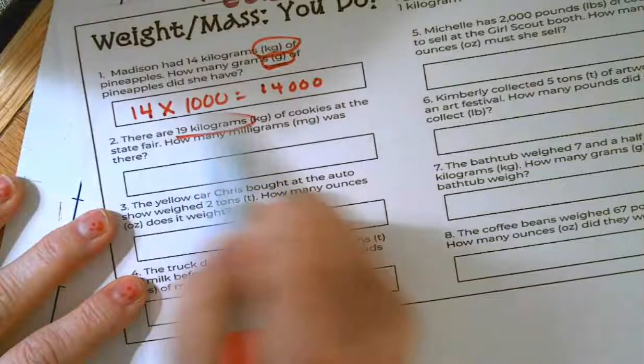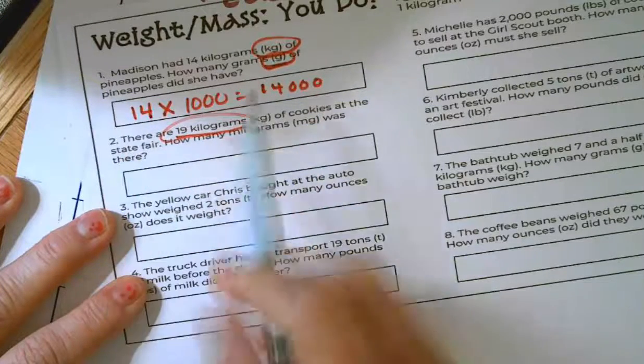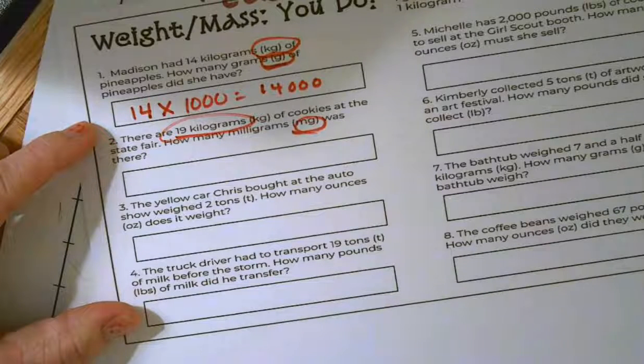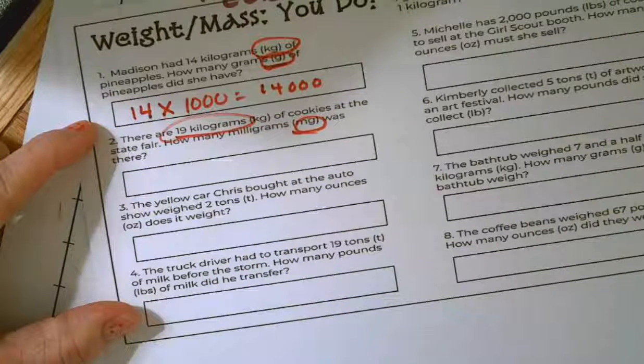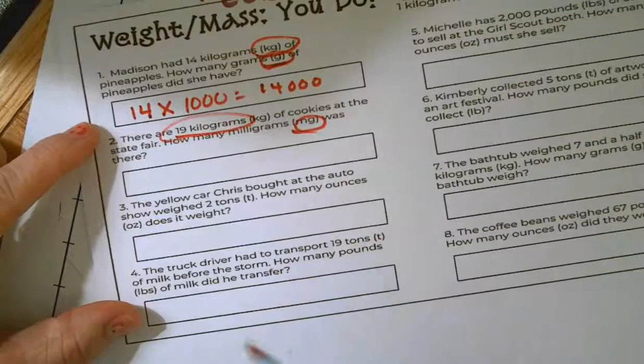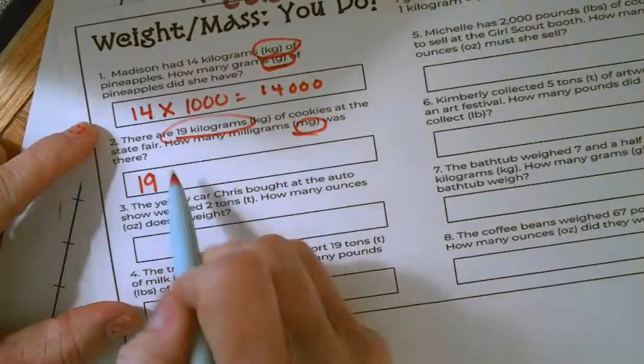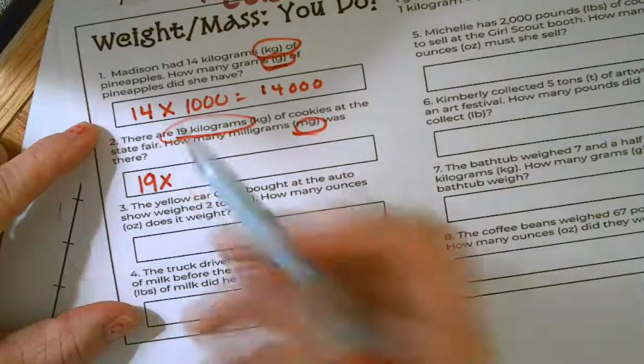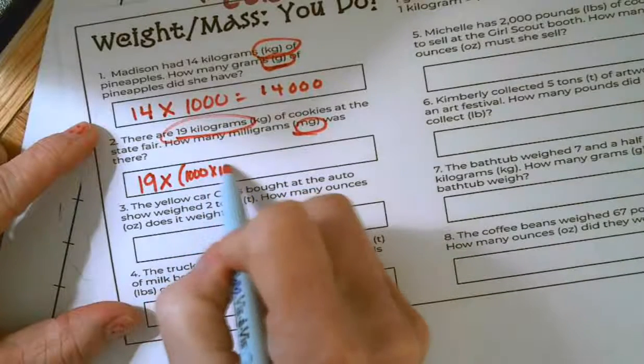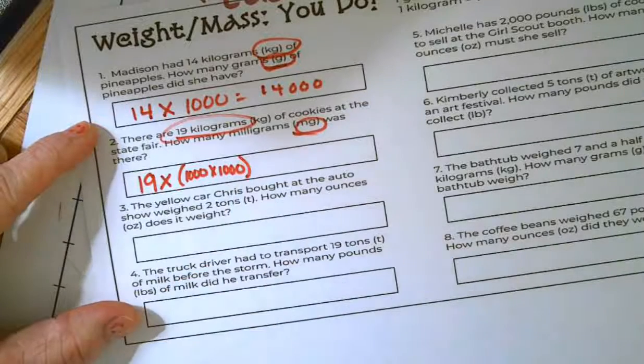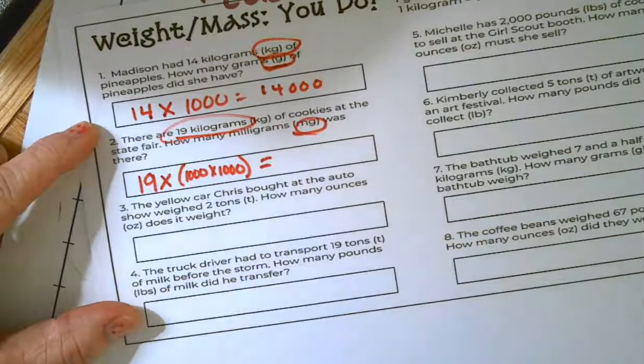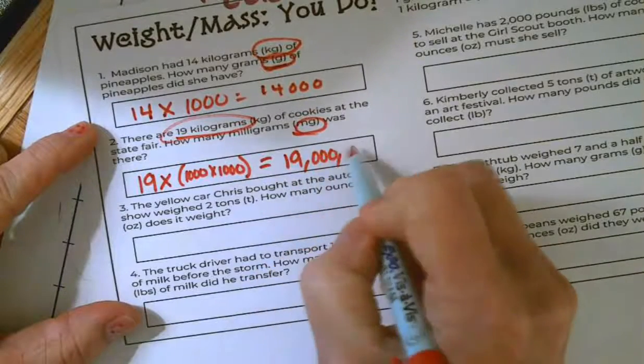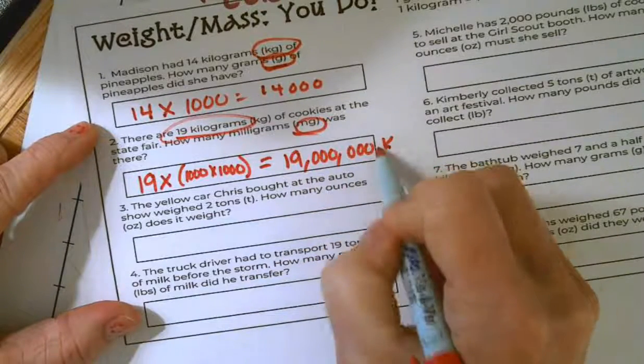All right. Number two, there are 19 kilograms of cookies at the state fair. How many milligrams is that going to be? All right. We are going from kilograms all the way down to milligrams. So this is going to be another one of those two-step processes. So I'm going to say I've got 19. I'm going from the larger to smaller. So I'm multiplying. And I know that I'm going to have to say 1,000 times 1,000 to give me 1,000,000, which is going to be 19 times a million, which will be 19 with six zeros on the end. That's a lot of milligrams.